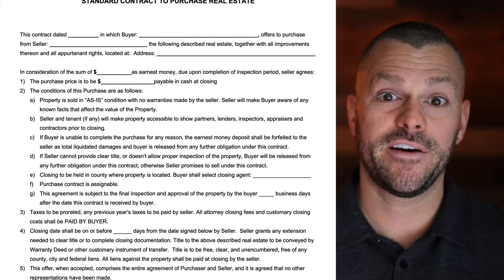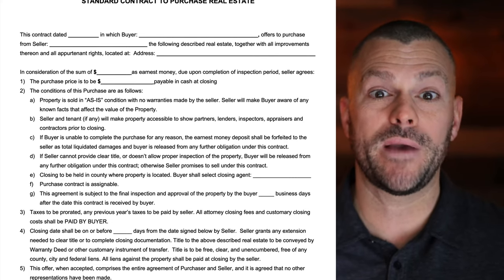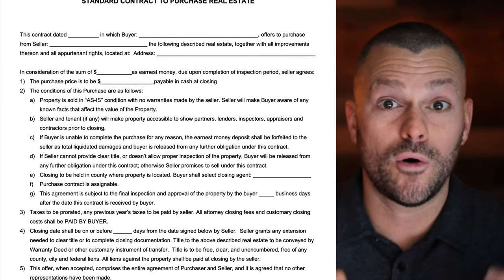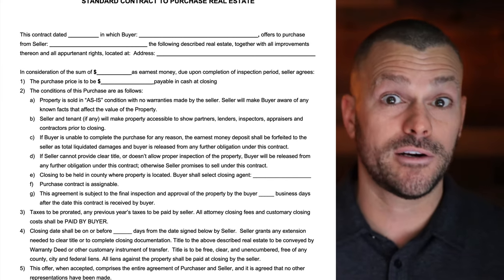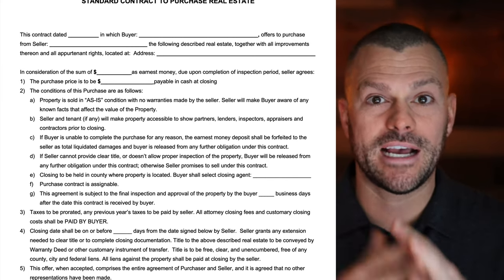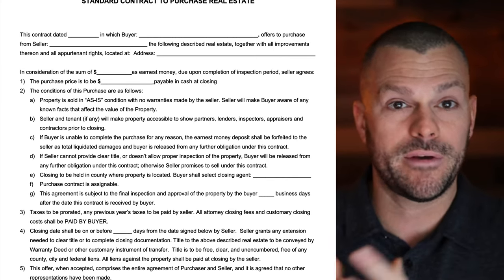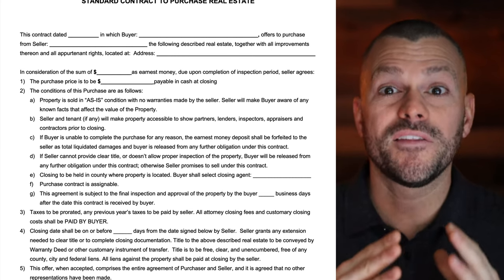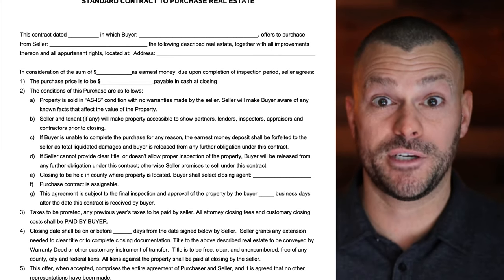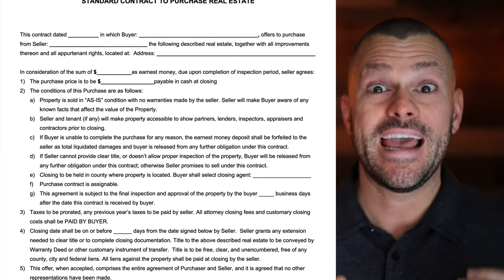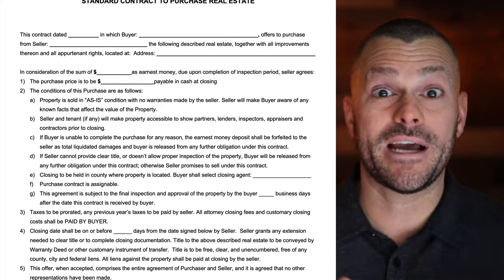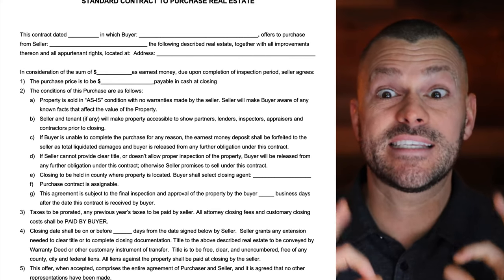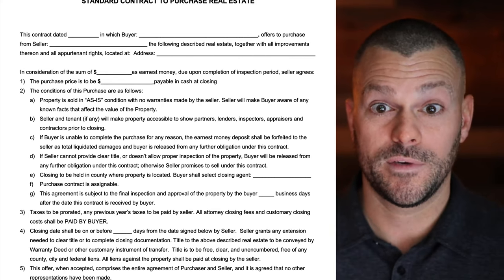Notice that I put the earnest money is due upon completion of the inspection period — very important. What that means is I don't need to deposit my earnest money to the local title company or escrow company or closing attorney unless I have completed my inspection period and the inspection comes back positive and acceptable. Next, the purchase price is to be payable in cash at closing.